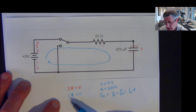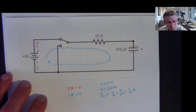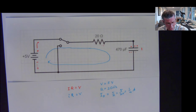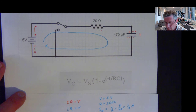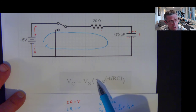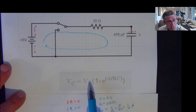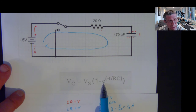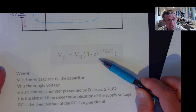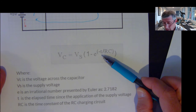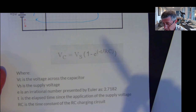Ohm's law is always going to be true — I just have to be careful about the time points. Those two things are still going to be the same. If I use current and take derivatives with respect to time for current, I can get to an equation that says the voltage across the capacitor is going to equal the voltage across my source times 1 minus e to the negative T divided by R times C. E is that irrational number, T is time, and RC is the resistance in Ohms times the capacitance in Farads.